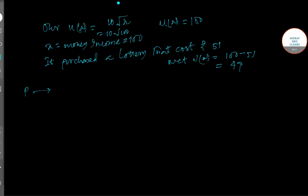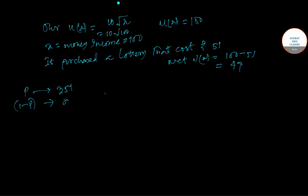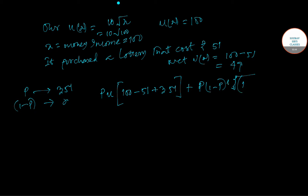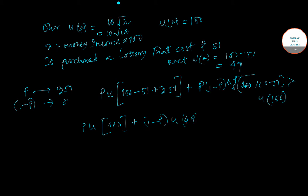With probability p she earns 351, and with probability 1 minus p she earns 0. Therefore the expected utility will be: with probability p, the total amount is 100 minus 51 plus 351, and with probability 1 minus p she gets only the utility of 100 minus 51, which equals 49. This expected utility should be strictly greater than the utility from not purchasing any lottery, which is 100.